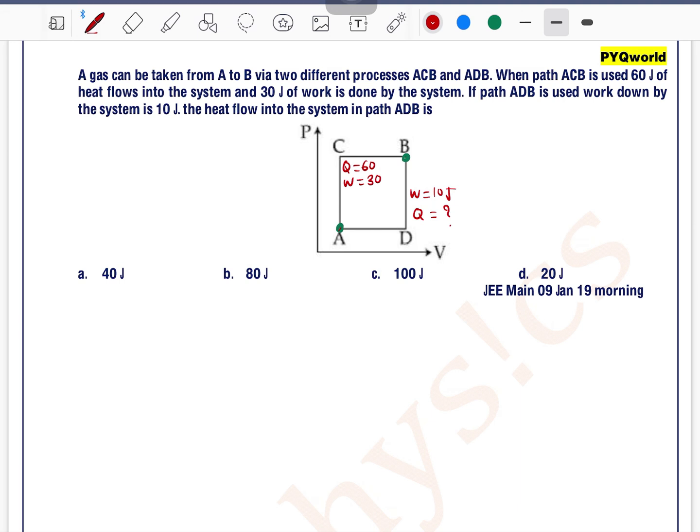So work done is equal to 10 joules, then the heat flow into the system is? In this process, the initial point and final point are the same.